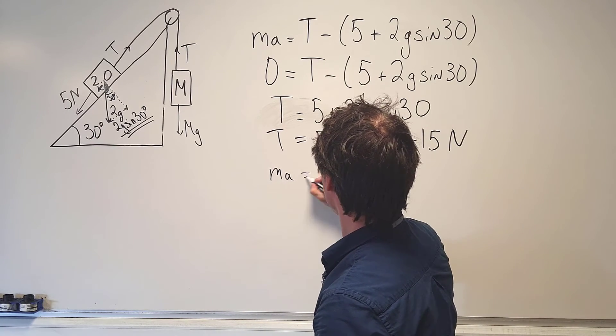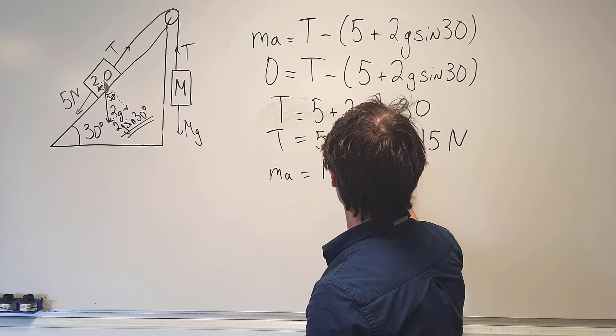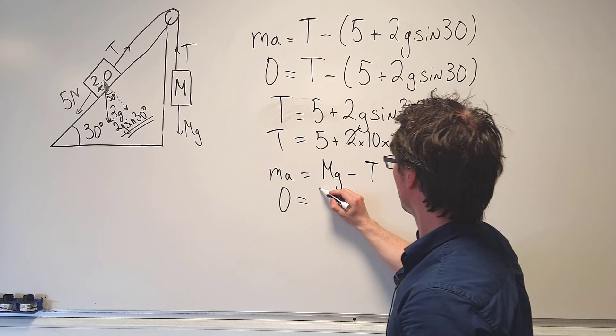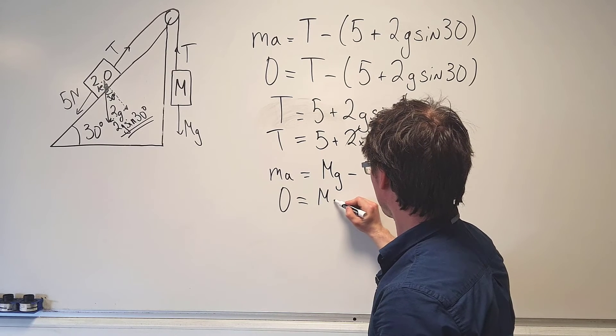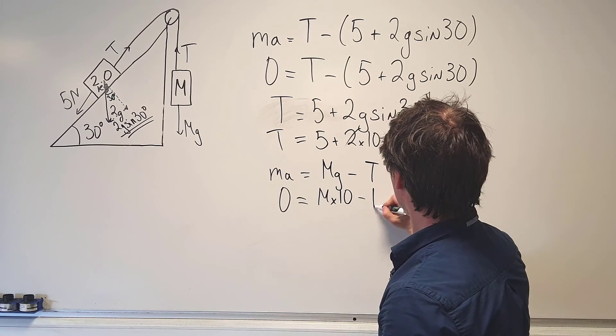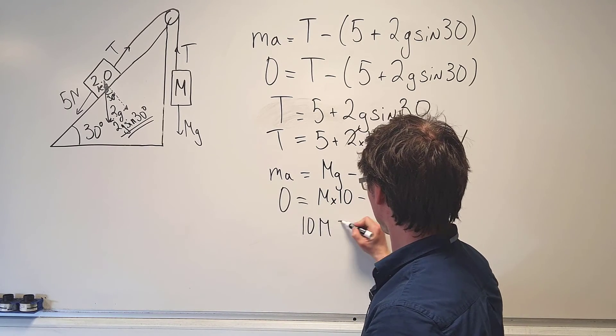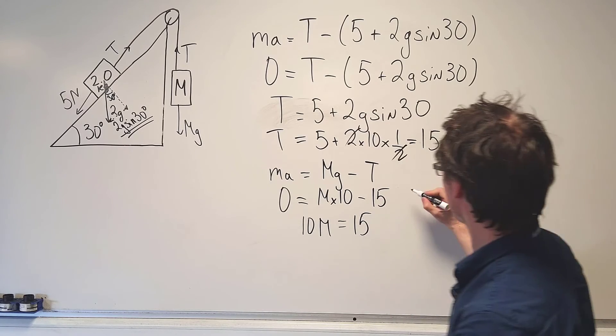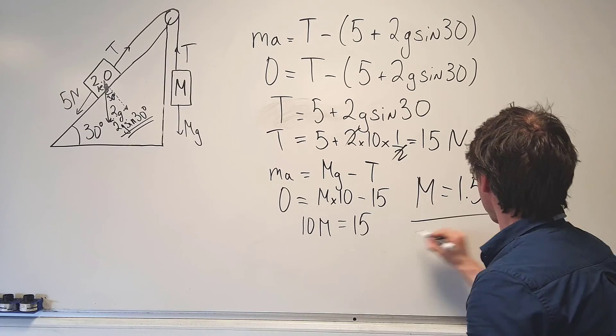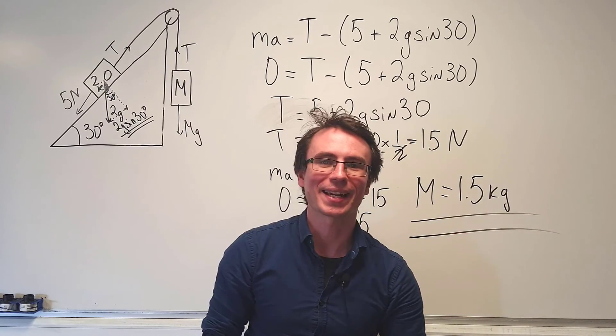So ma will be equal to mg minus the tension T. No acceleration, zero will be equal to mg or m times 10 take away 15, meaning that 10 times m will be equal to 15, meaning that m is equal to 1.5 kilograms and this is our correct answer.